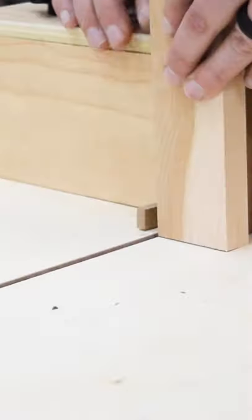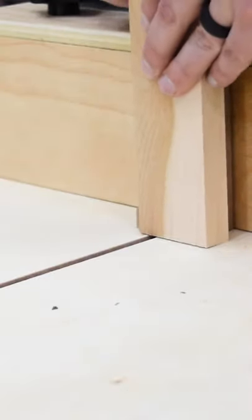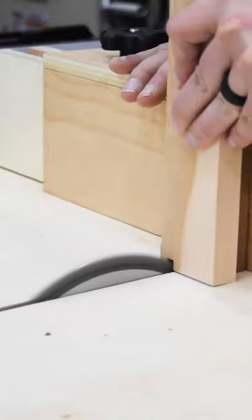Then stack both pieces and hold them vertically against the sled's fence. You should have the back piece against the preset pin and the front piece against the outside edge of the blade.